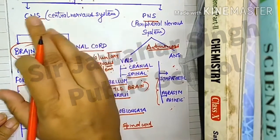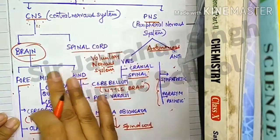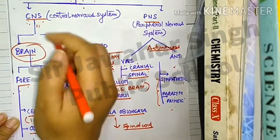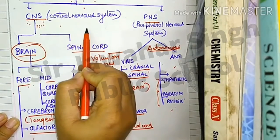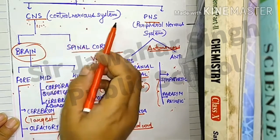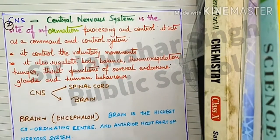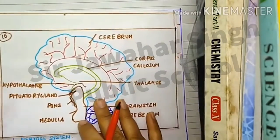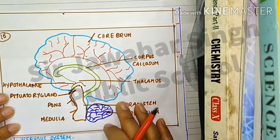The human nervous system is further divided into CNS and PNS. Our topic today is the brain. The brain comes under the Central Nervous System. This is the structure of the brain.